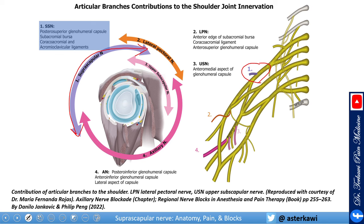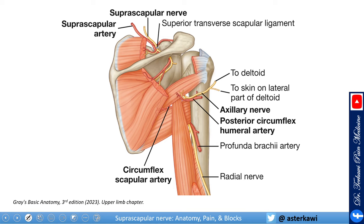The second major nerve is the axillary nerve, which comes from the posterior cord and is mainly responsible for the posterior inferior glenohumeral capsule, anterior inferior glenohumeral capsule, and the lateral aspect of the capsule.